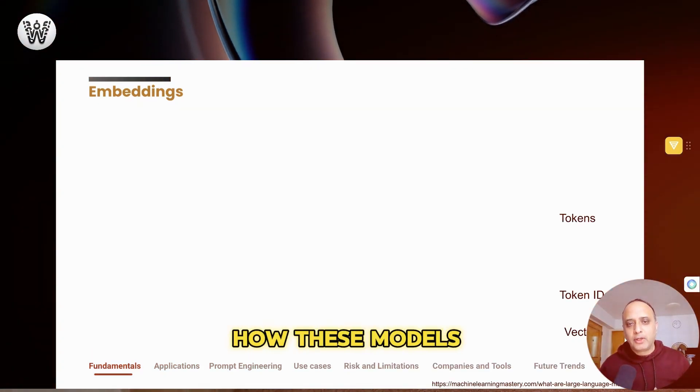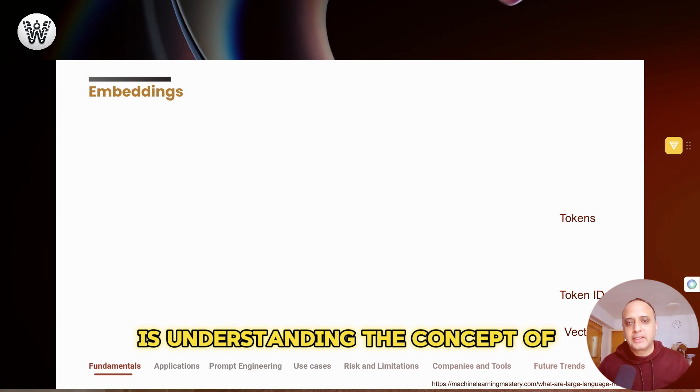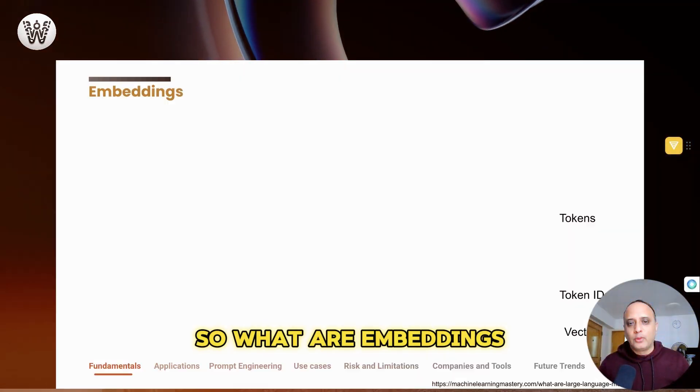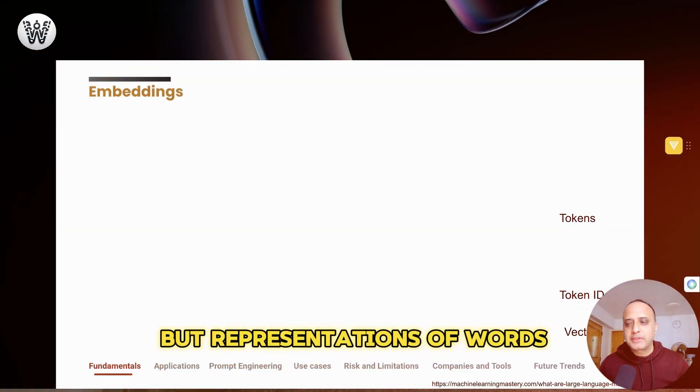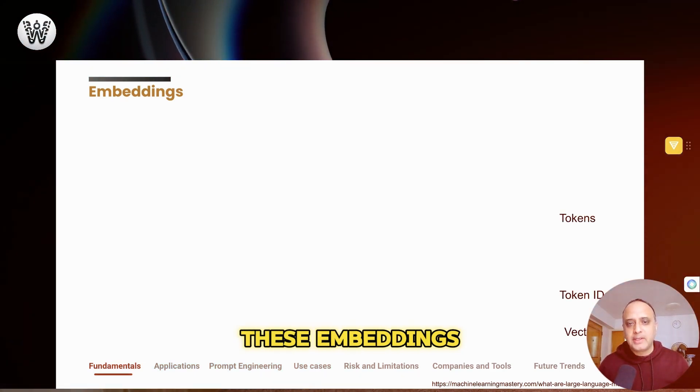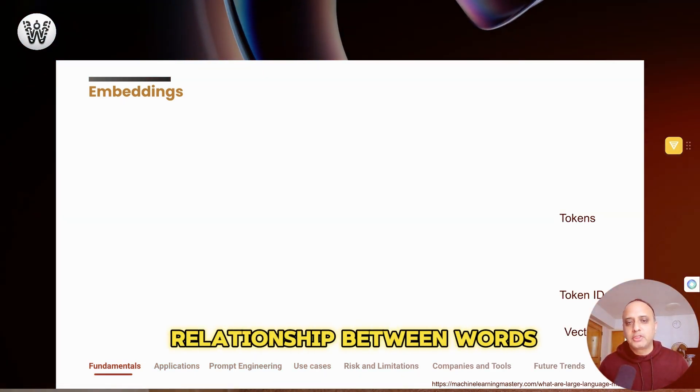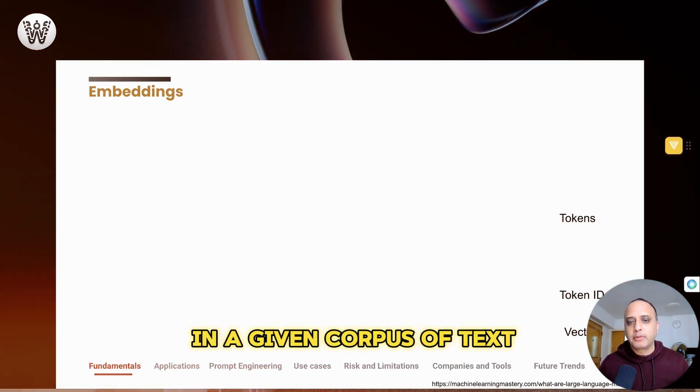Let's now try to understand how these models understand language or text, and one of the key components in doing that is understanding the concept of embeddings. So, what are embeddings? Embeddings are nothing but representations of words or phrases in a continuous vector space. These embeddings are lists of numbers. They capture the semantic relationship between words based on their context in a given corpus of text.